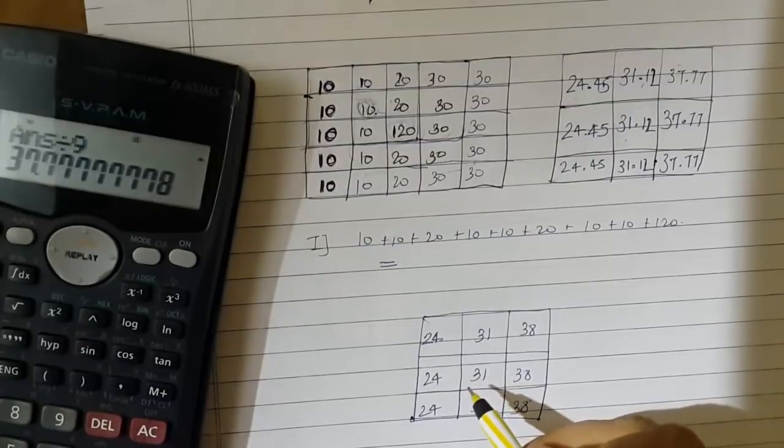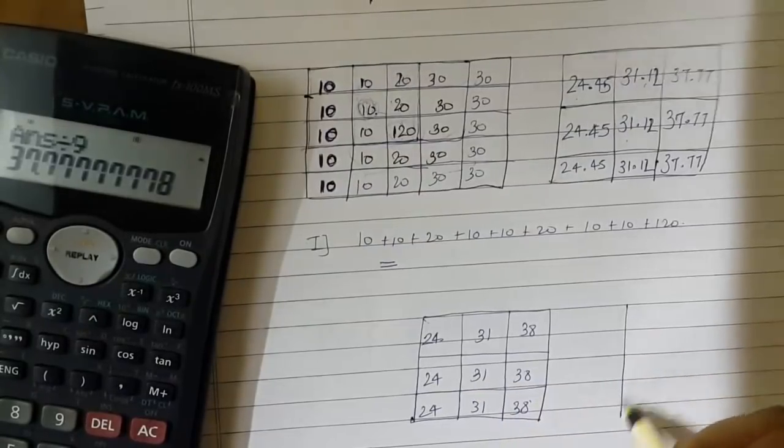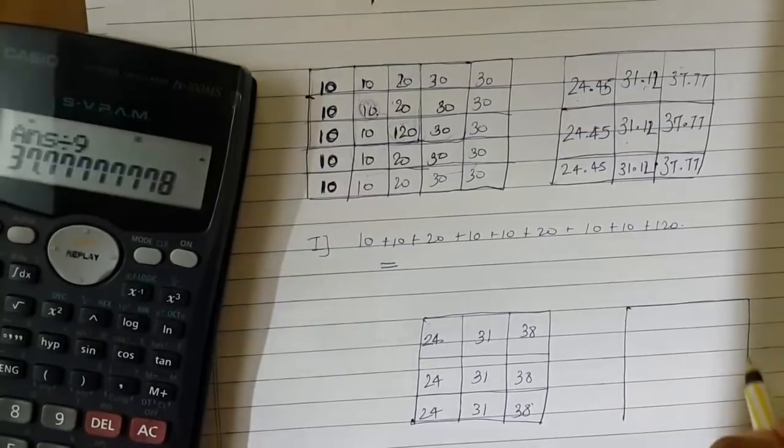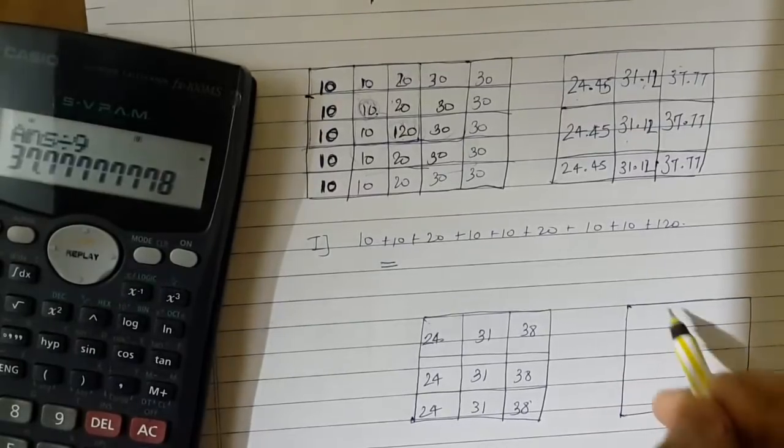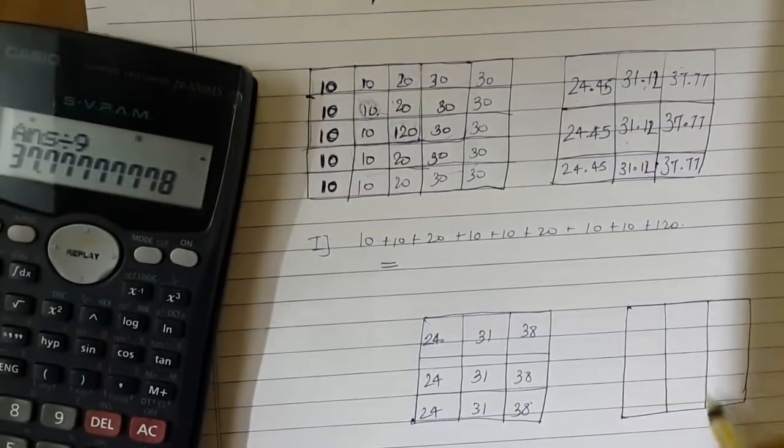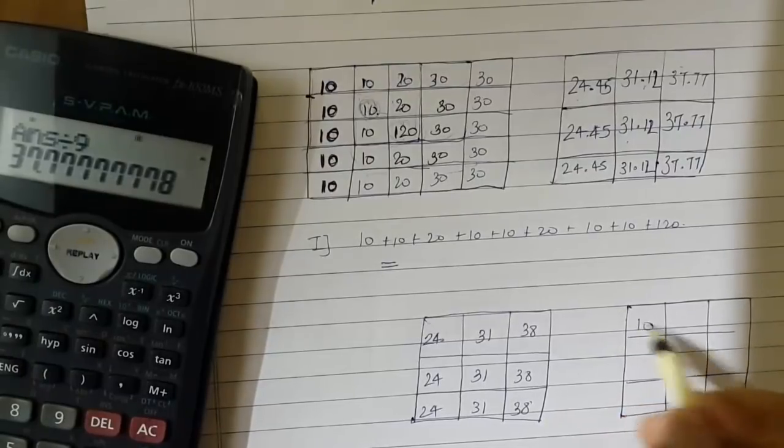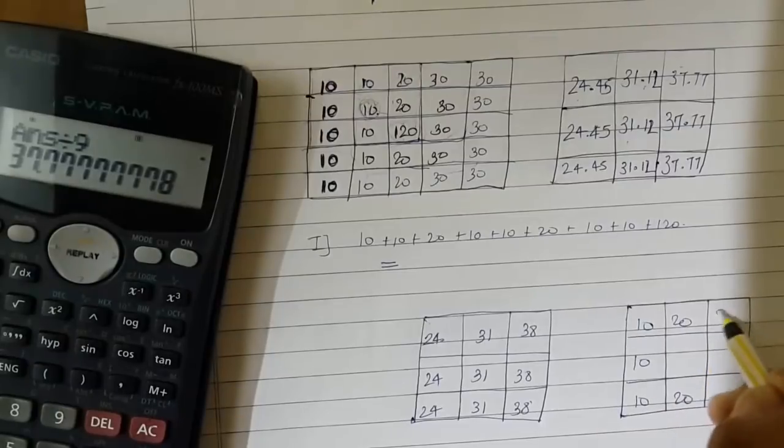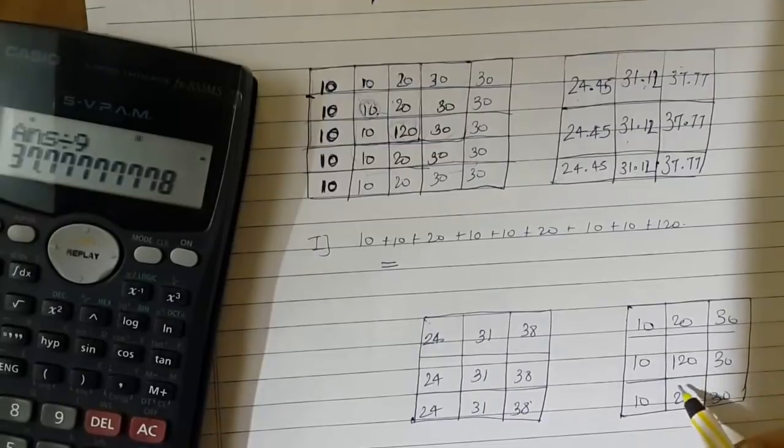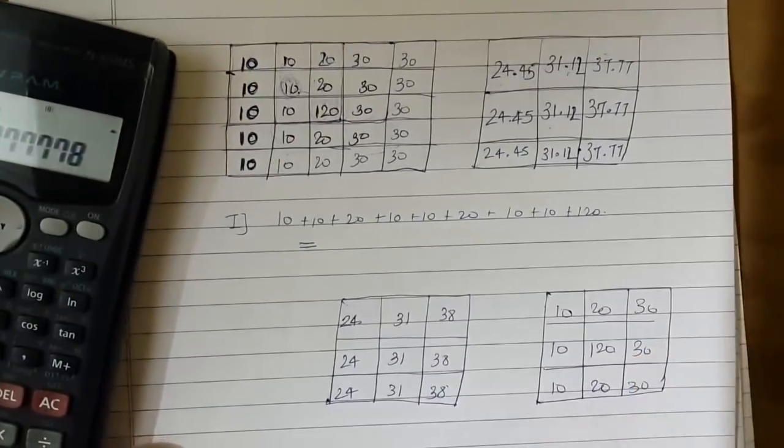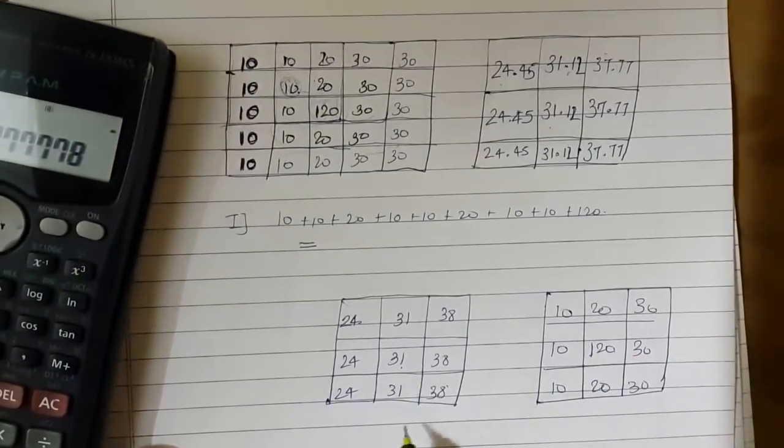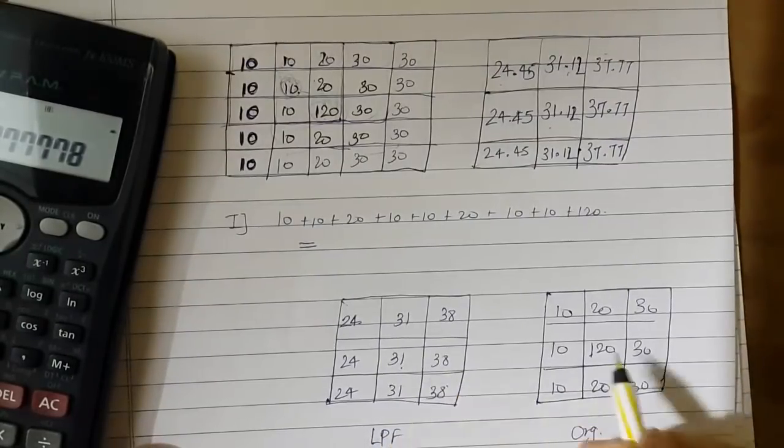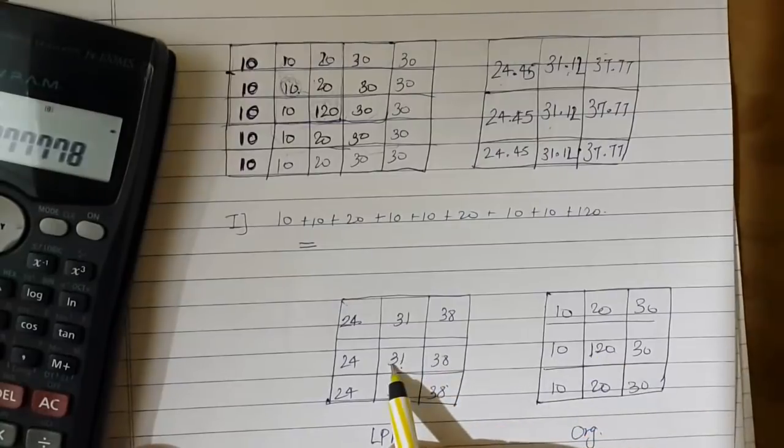Compare this with the original image which was 10 over here, 10, 10, 20, 20, 30, 30, and the bright spot, the star, 120.